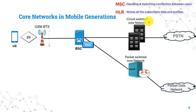The 2G is also connected to a second core network called packet switching. The main function of packet switching networks is to provide mobile subscribers with access to packet data networks like the internet. Accordingly, a 2G subscriber can make voice calls using circuit switching networks and data sessions using packet switching networks.